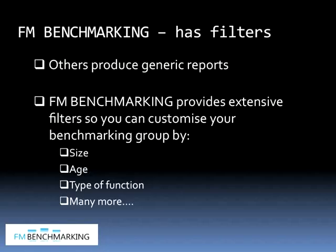FM benchmarking has filters, whereas others produce generic reports — asking just whether your building is an office building and giving you a generic report. We actually have filters that you can select. Here are some of the key ones: you can choose size, age, and type of function — for example, housing, manufacturing, or office. There are actually 50 or more filters in the system. You can choose your climate zone and compare your buildings against all buildings in the same climate zone. The filters really allow you to get down to as comparable a peer group as possible when comparing your benchmark data.